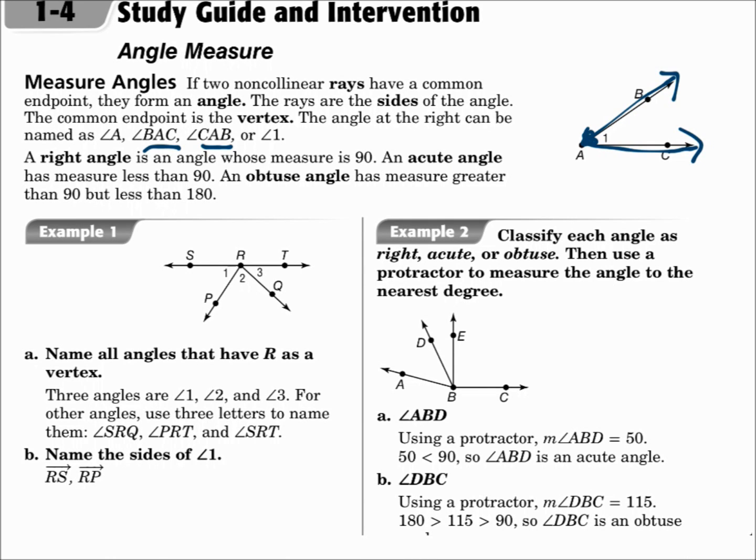A right angle is an angle whose measure is 90. An acute angle has a measure less than 90. It's a cute little angle, that's how you remember. An obtuse angle has a measure greater than 90 but less than 180. It's obtuse, it's obnoxious, it's greater than 90, that's how you remember.